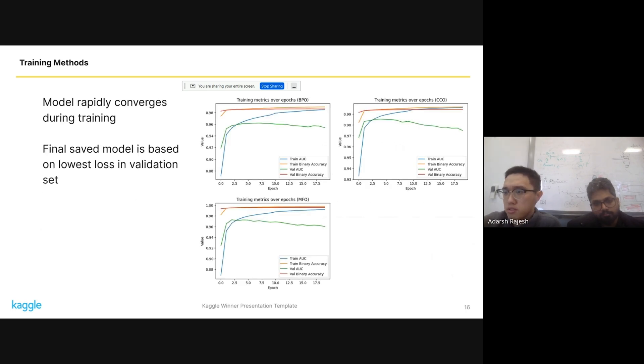So we observed that our model, even though it's quite simple, actually converges rapidly during training. And you can see that it quite rapidly starts overfitting. So this was an issue that we had as we iterated through different architecture details to try and figure out a way to minimize this. And in the end, it was sort of just trying different layer sizes and different regularization methods as well. And of course, the final model that we use for all of them is just based on the lowest loss in the validation set.